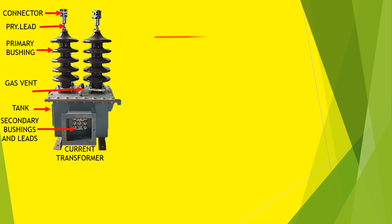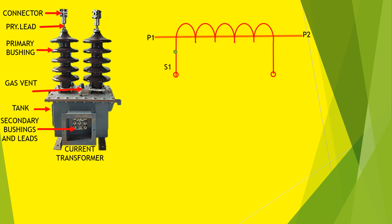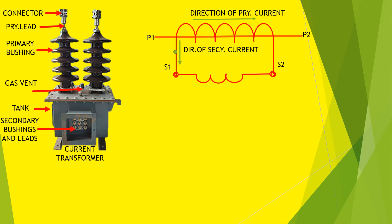Looking at the drawings, P1 and P2 are the connection leads of the primary winding. S1 and S2 are the connecting leads of the secondary winding. If the direction of flow of current in the primary winding is along P1 to P2, then the direction of flow of current in the secondary winding is opposite to that of the primary. A CT is only operated under short circuit condition.